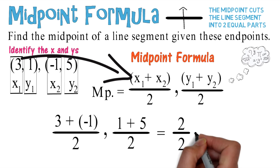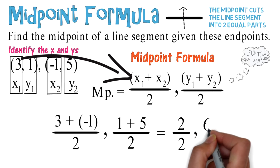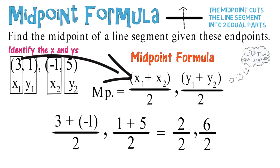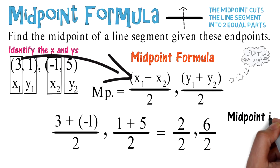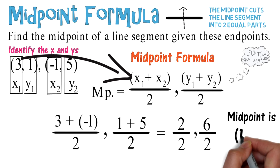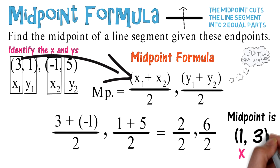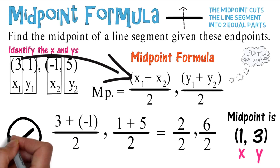Simplifying: 3 + (-1) gives you 2, divided by 2. And 1 + 5 gives you 6, divided by 2. Continue simplifying and you get your midpoint. Remember, the midpoint is an (x, y) coordinate — so your answer is (1, 3). Good work!